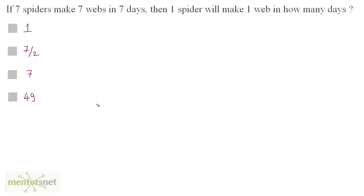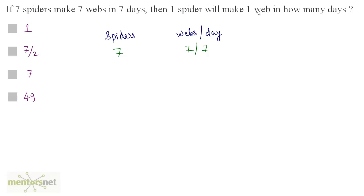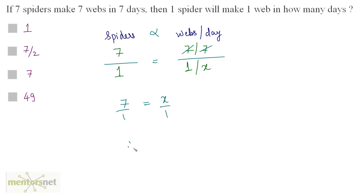If 7 spiders make 7 webs in 7 days, then 1 spider will make 1 web in how many days? We consider number of spiders and webs per day. We have 7 spiders who make 7 webs in 7 days, and we need to find how many days 1 spider takes to make 1 web. Since more spiders make more webs, this is a direct proportion. Taking the ratio: 7 by 1 equals x by 1, so 7 and 7 cancel, giving x equals 7. Option C.